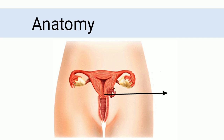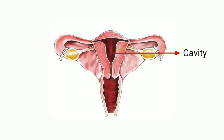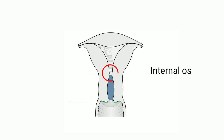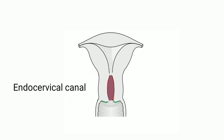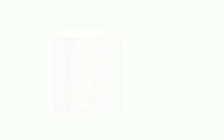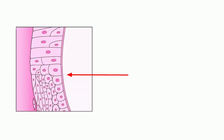You will be able to understand it better if you know the anatomy of the cervix. The cervix is the lower, narrower portion of the uterus. It connects the cavity of the body of the uterus with the lumen of the vagina. There are two openings: the internal os above and the external os below, with the endocervical canal in between. The mucosa lining the cervical canal is known as the endocervix, and the outer portion is called the ectocervix. The endocervix is lined by columnar cells and the ectocervix is lined by squamous cells. The junction between the two is called the squamo-columnar junction.